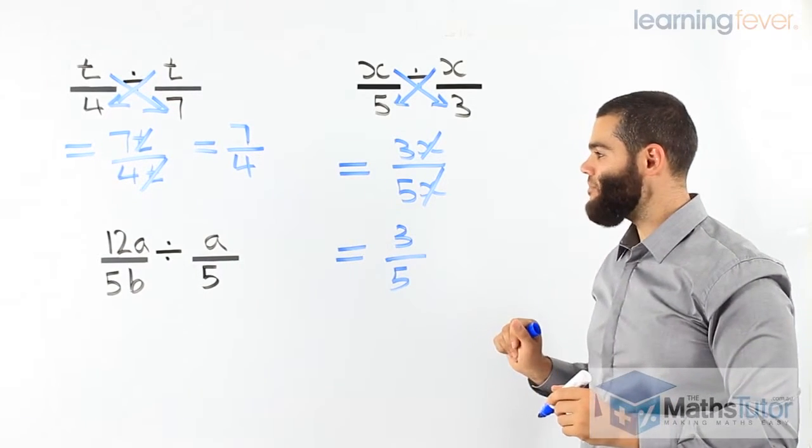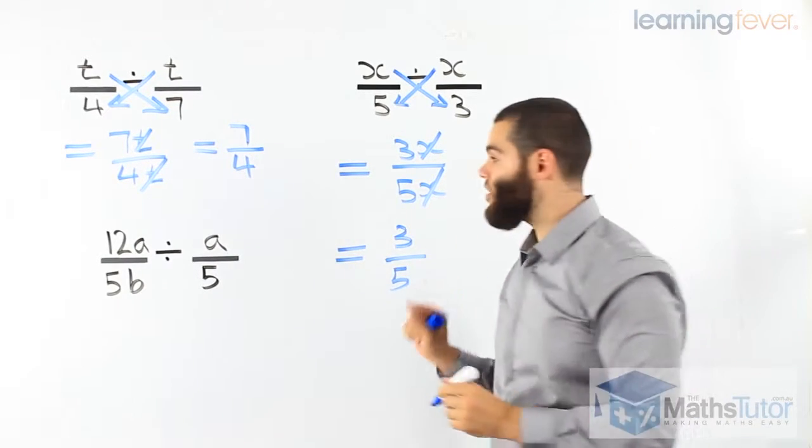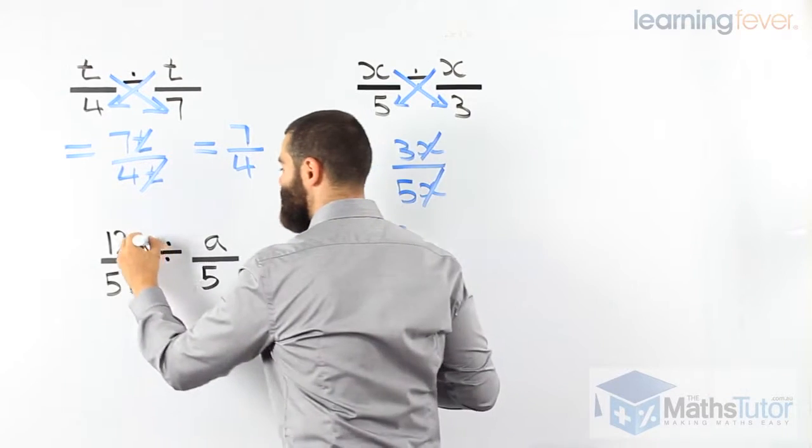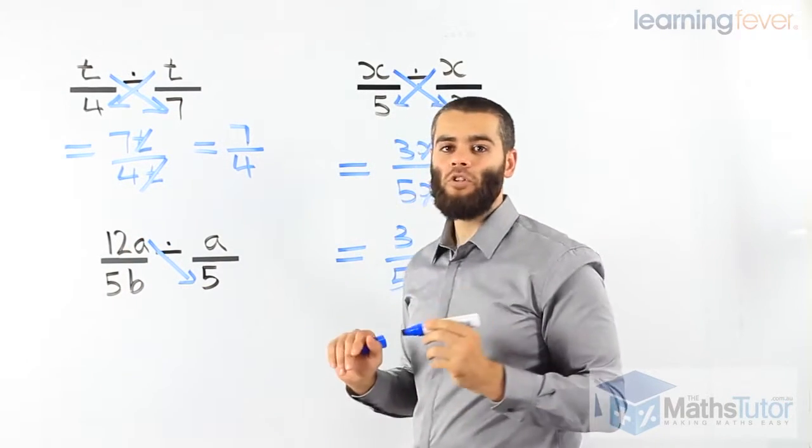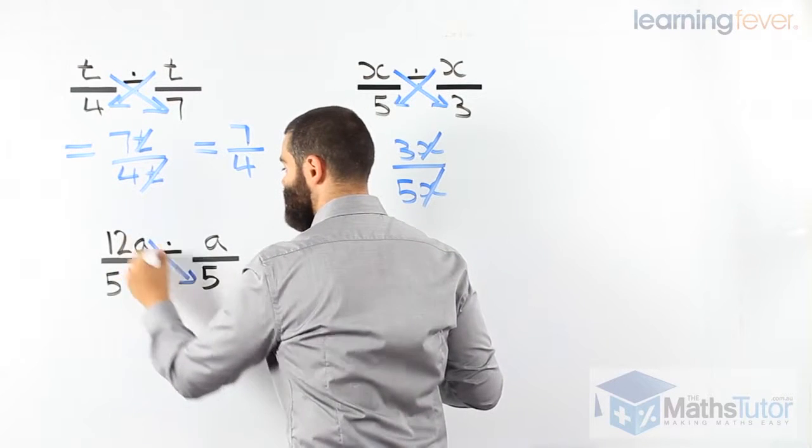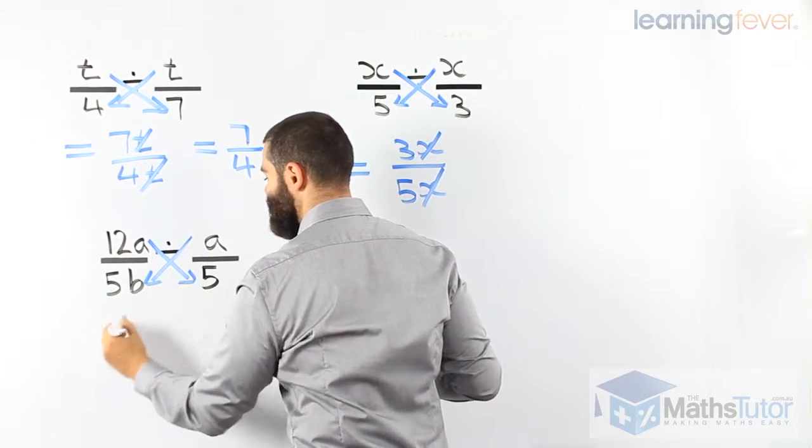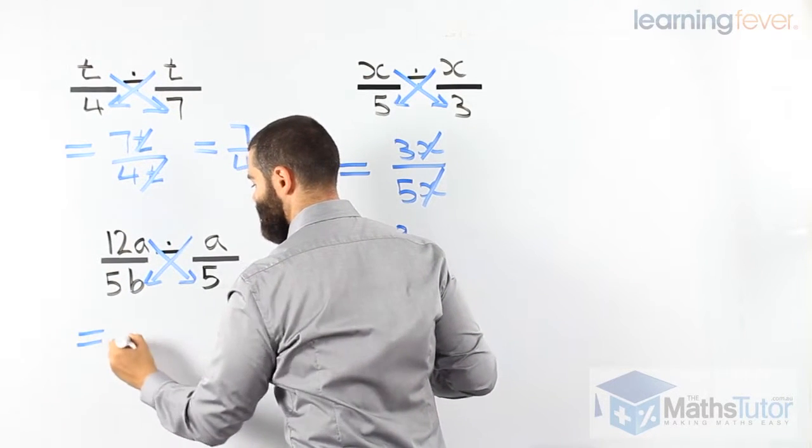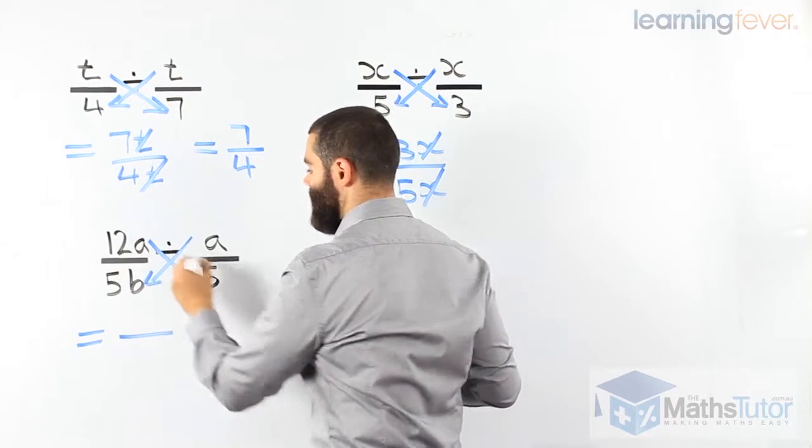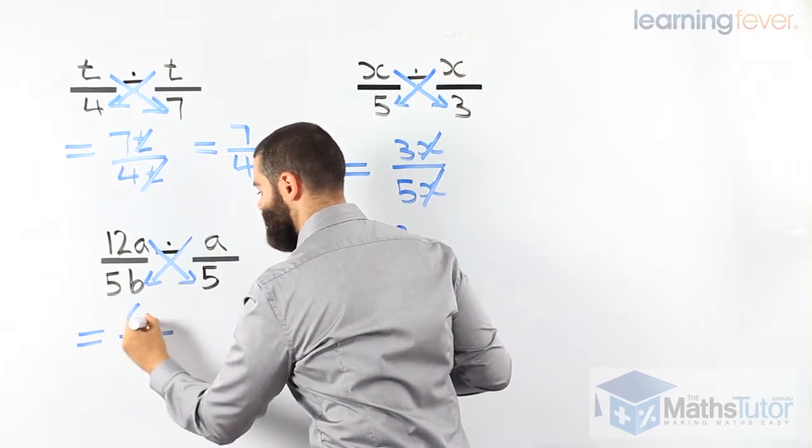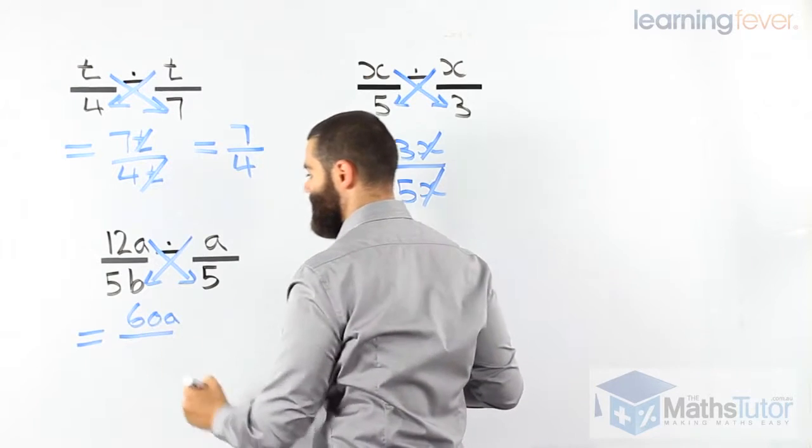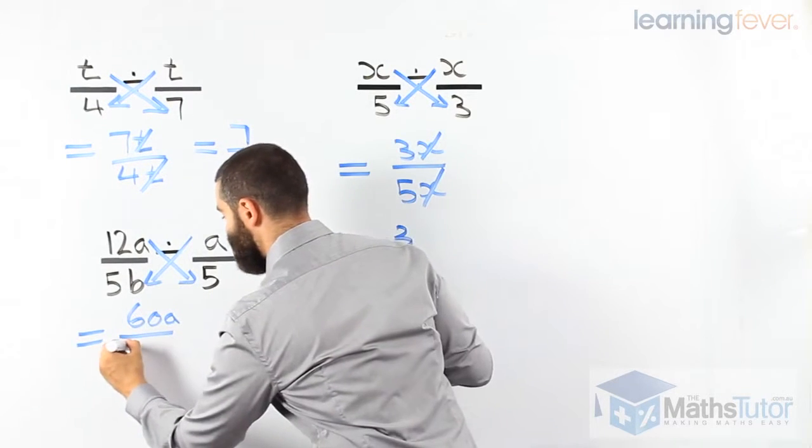We'll do the last one. What do we do? We cross multiply. I always like to show the arrows to remind myself what I'm doing. So, I'm multiplying, then I'm multiplying again. 12a times 5 is 60a. 5b times a is 5ab.